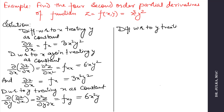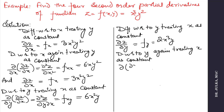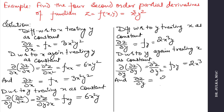If we differentiate z with respect to y, treating x as constant, we get ∂z/∂y, which equals f_y, and the answer is 2x³y. Differentiating with respect to y again, treating x as constant, gives ∂²z/∂y², or f_yy, which equals 2x³, since ∂z/∂y equals 2x³y.